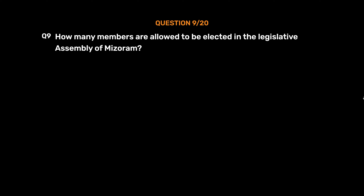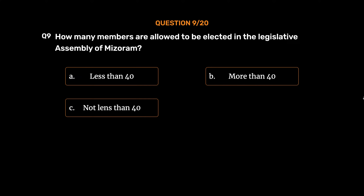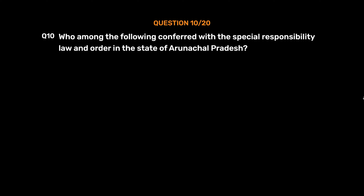Question No. 9: How many members are allowed to be elected in the Legislative Assembly of Mizoram? Option A: Less than 40. Option B: More than 40. Option C: Not less than 40. Option D: Not more than 40. The correct answer is Option C: Not less than 40.